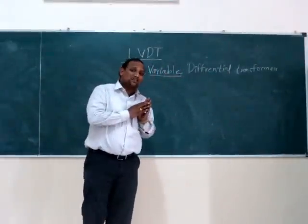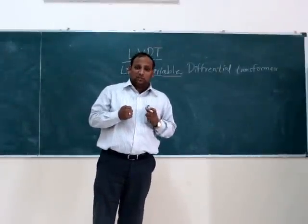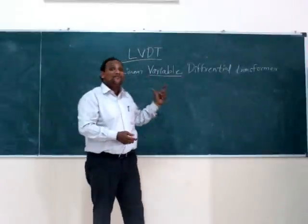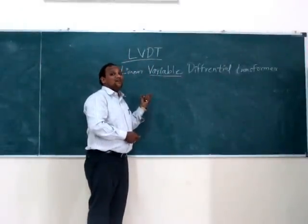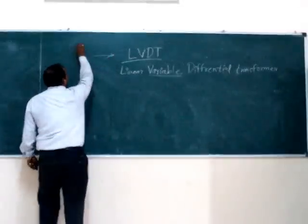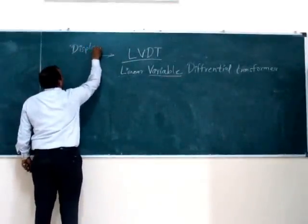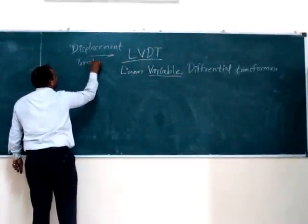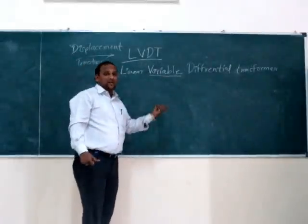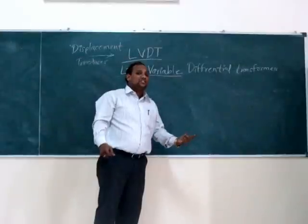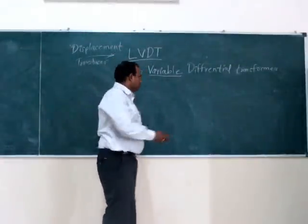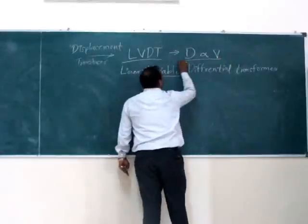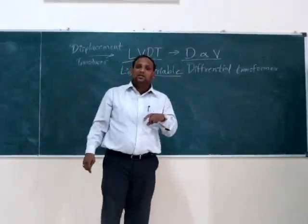Why is this known as a transducer? As we all know, a transducer is an electronic device which converts one form of energy into another. LVDT is a transducer and is known as a displacement transducer. For a given displacement, it will generate a particular amount of voltage in accordance with that displacement — meaning the displacement provided is directly proportional to the voltage generated.